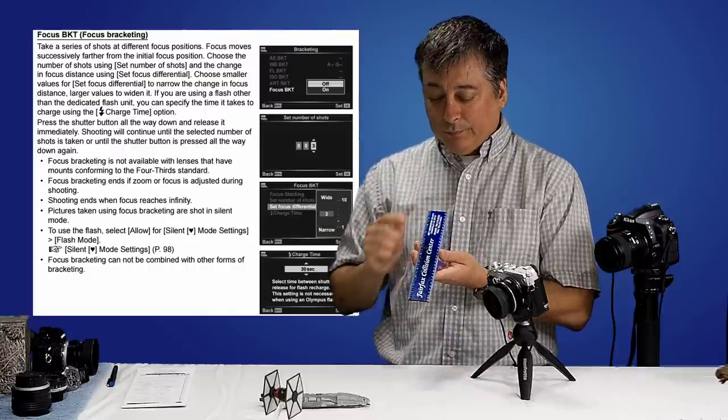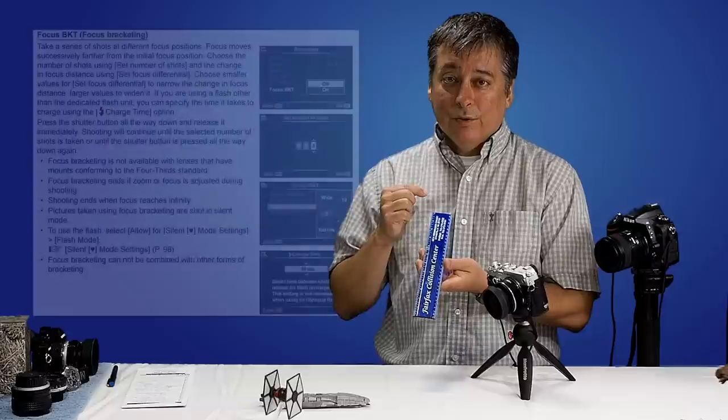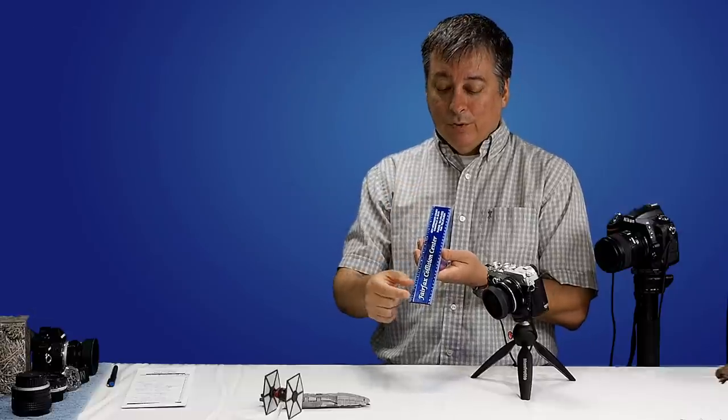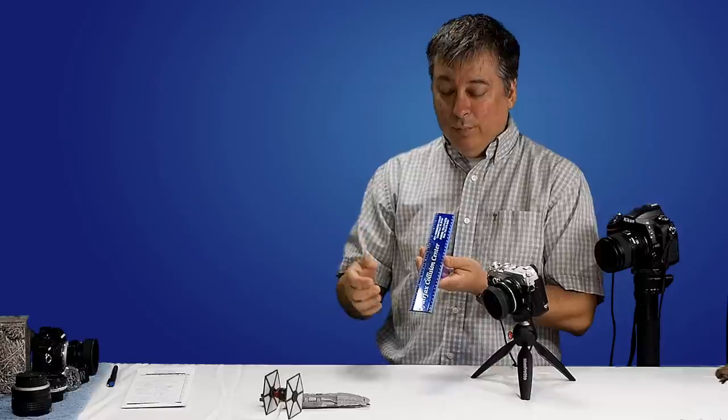And then what you'll have is maybe 10 pictures of this ruler, each one focused on a different point. And if you look at any individual picture, say this picture here that focused here, you'll notice this part will be in focus.